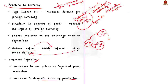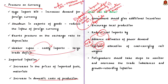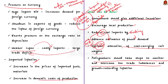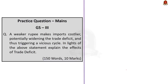So what can be done? According to the article, the government must consider additional incentives for exports while encouraging local production to reduce the import bill. The coal crisis should be dealt with by making advanced estimates of power demand, and optimal allocation of coal-carrying rail wagons should be done as summer persists, to reduce coal imports. Finally, policymakers should take necessary steps to monitor and overcome trade imbalances and growth-retarding inflation.